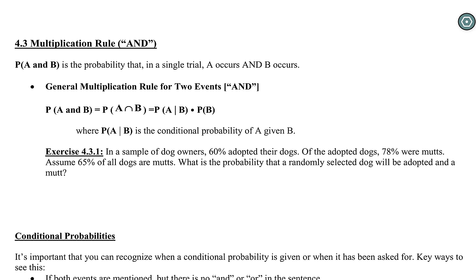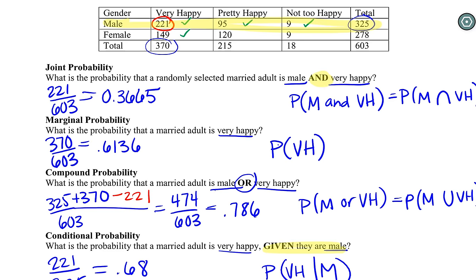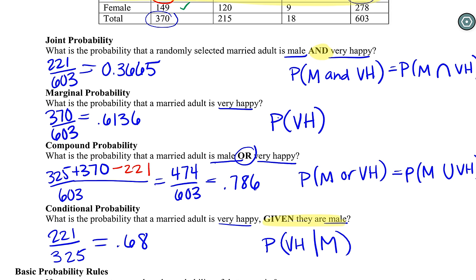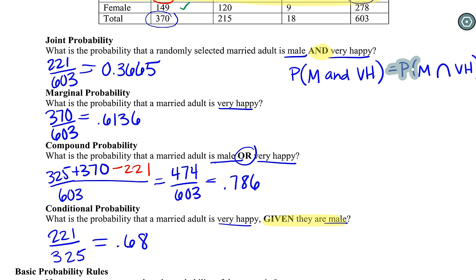If we think back to the problems we saw before with the males and the very happy from the first day, we looked at male AND very happy — it was the first probability we found. And we also had our given probability. Now our given probability is set up differently than the one here, but I'm going to take a moment and erase all of this work that we did in class and think about that formula from the last page.